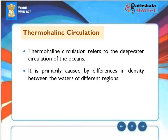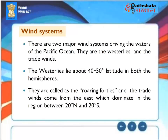Thermohaline circulation refers to the deep water circulation of the oceans, primarily caused by differences in density between waters of different regions. There are two major wind systems driving the waters of the Pacific Ocean: the westerlies and the trade winds. The westerlies lie at about 40 to 50 degrees latitude in both hemispheres — called the roaring 40s — and the trade winds come from the east, dominating the region between 20° north and 20° south.